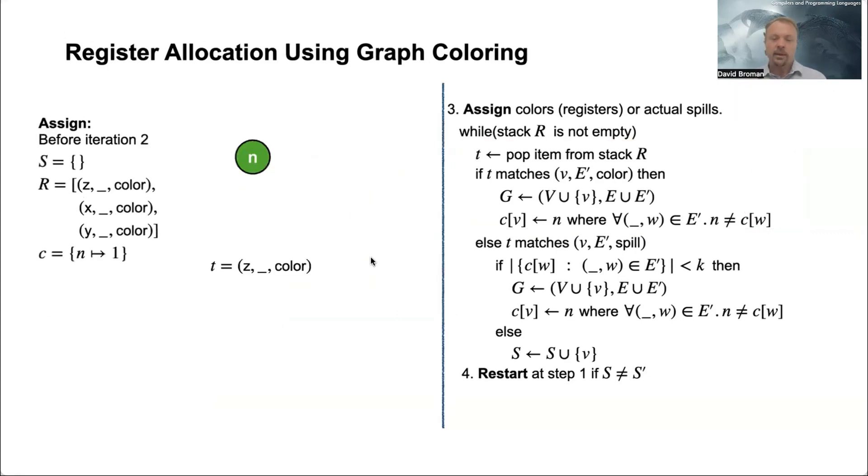Okay, that was the first step. And then now we're picking the next one on the stack - now we have z. So what happens then? Well, we go through all the steps here. We go into this branch here, we reconstruct the graph.